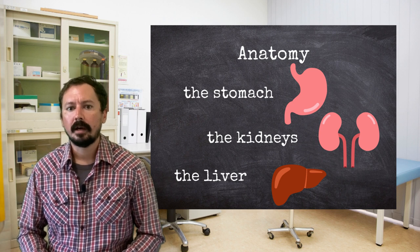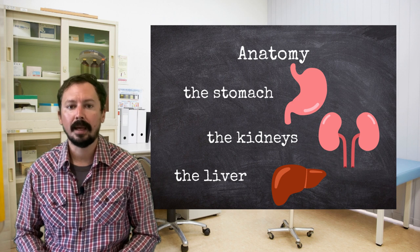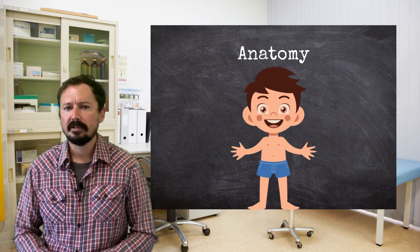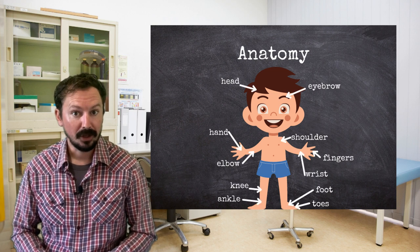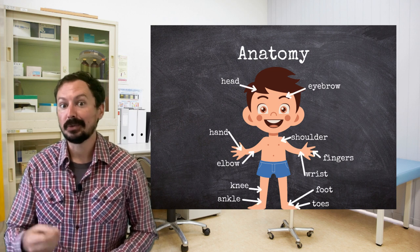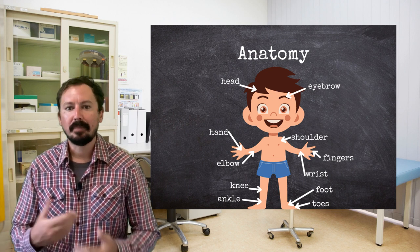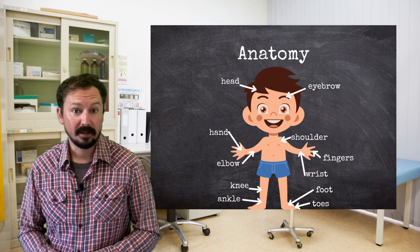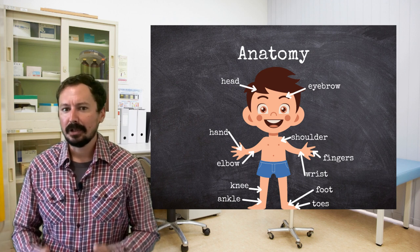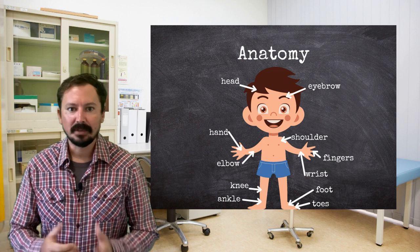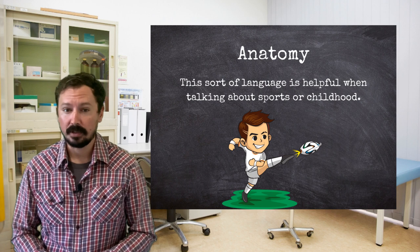Beyond that, interior body parts may be useful to know, but they're definitely non-essential in terms of vocabulary. As for exterior parts, you really ought to remember the things you were taught in primary school. Remember songs like head, shoulders, knees and toes? Well, you should know that, but also think beyond that and learn to be specific. We have hands and fingers, feet and toes. Learn the joints like knees, elbows, ankles and wrists. All of these could be useful even in other topics like sports.